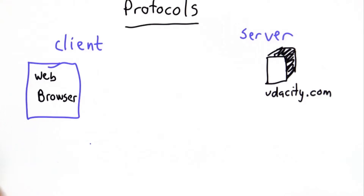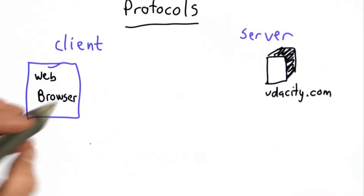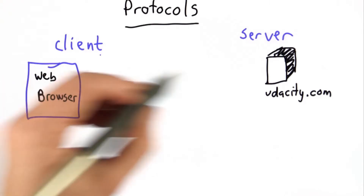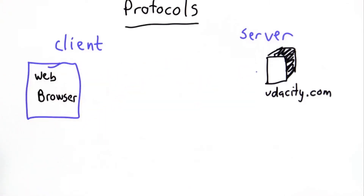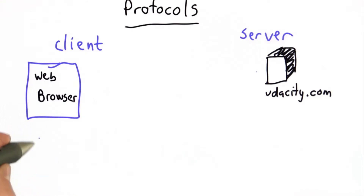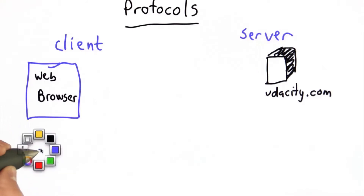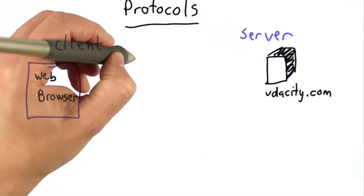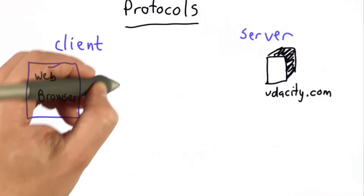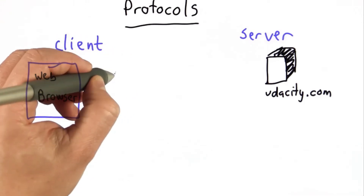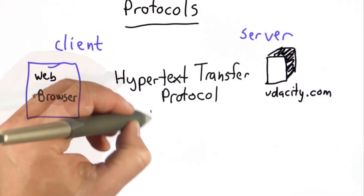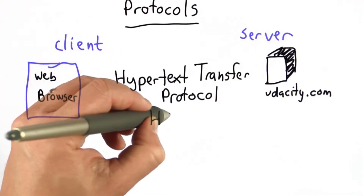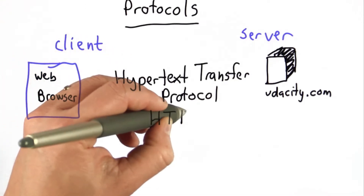What the protocol says is, if you want to get the server to do something, the client has to send a message in a particular way. The protocol that we use on the web is called Hypertext Transfer Protocol, which is abbreviated as HTTP.